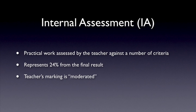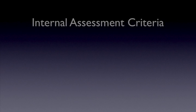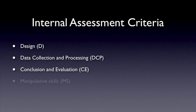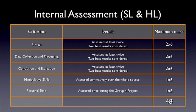There are five criteria used in internal assessment. The first three criteria have to be assessed at least twice during the course, and the two best results are considered for the final IA grade. When a criterion is assessed, you get a grade on a scale from 0 to 6. The manipulative skills criterion is assessed summatively over the whole course, and the personal skills criterion is assessed once during the Group 4 project.